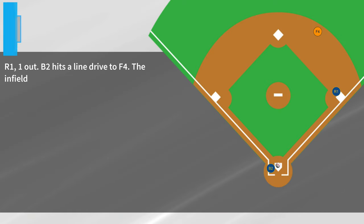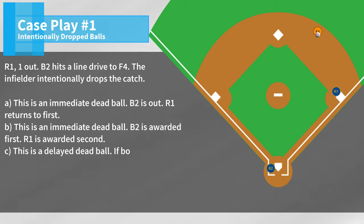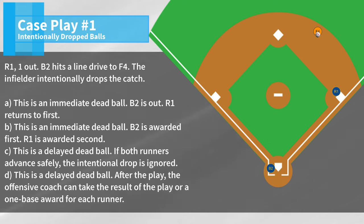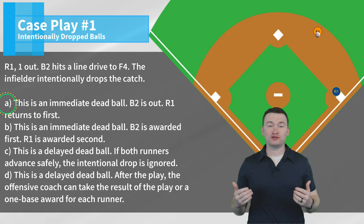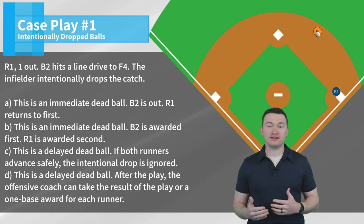Case play number one. R1, one out. B2 hits a line drive to F4. The infielder intentionally drops the catch. Is this: A) this is an immediate dead ball, B2 is out, R1 returned to first; B) this is an immediate dead ball, B2 is awarded first, R1 is awarded second; C) this is a delayed dead ball, if both runners advance safely the intentional drop is ignored; or D) this is a delayed dead ball, after the play the offensive coach can take the result of the play for a one-base award for each runner. The correct answer is A — this is an intentionally dropped ball. For an intentionally dropped ball, it's always going to be an immediate dead ball. The batter is out and all runners on base return to their position at the time of the pitch.